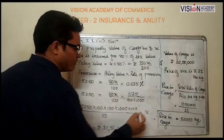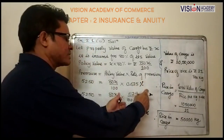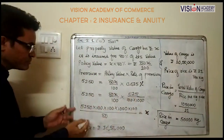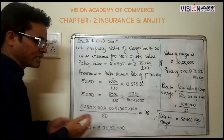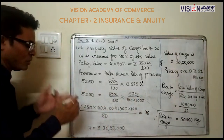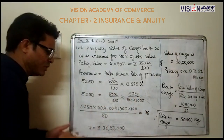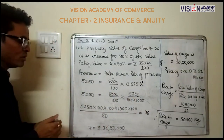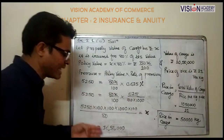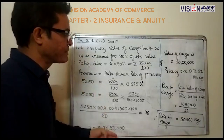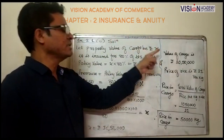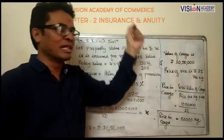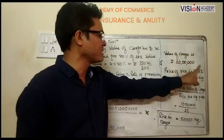For the required value of x, we transfer all values from right to left using the cancellation method. The value of x comes to rupees 10 lakhs 50 thousand. This x is your value of cargo, so value of cargo is rupees 10 lakhs 50 thousand.